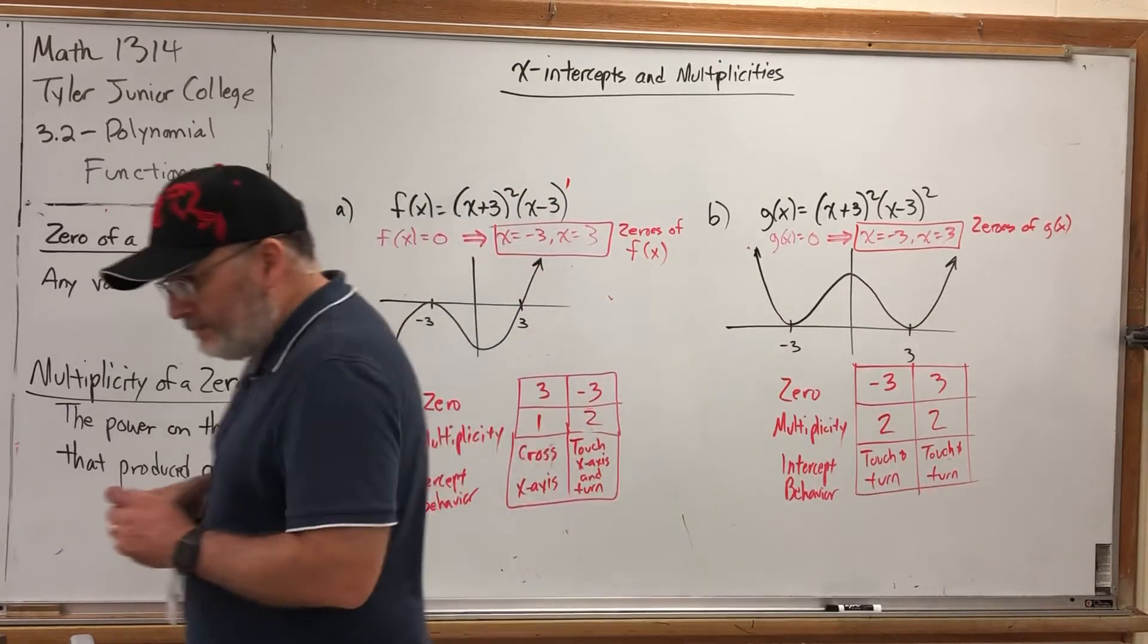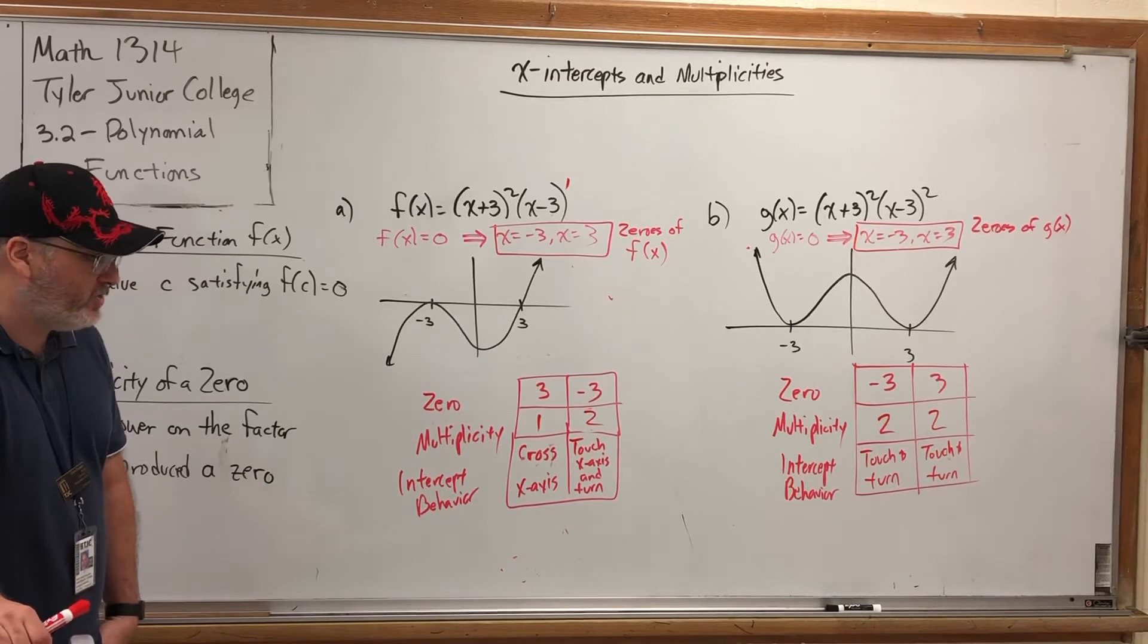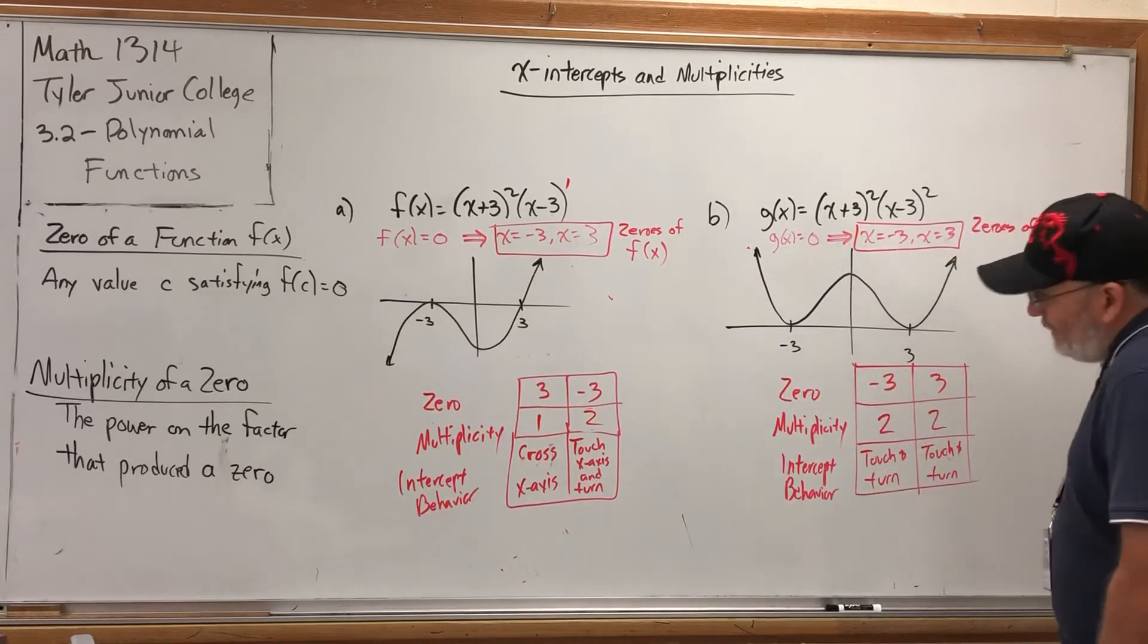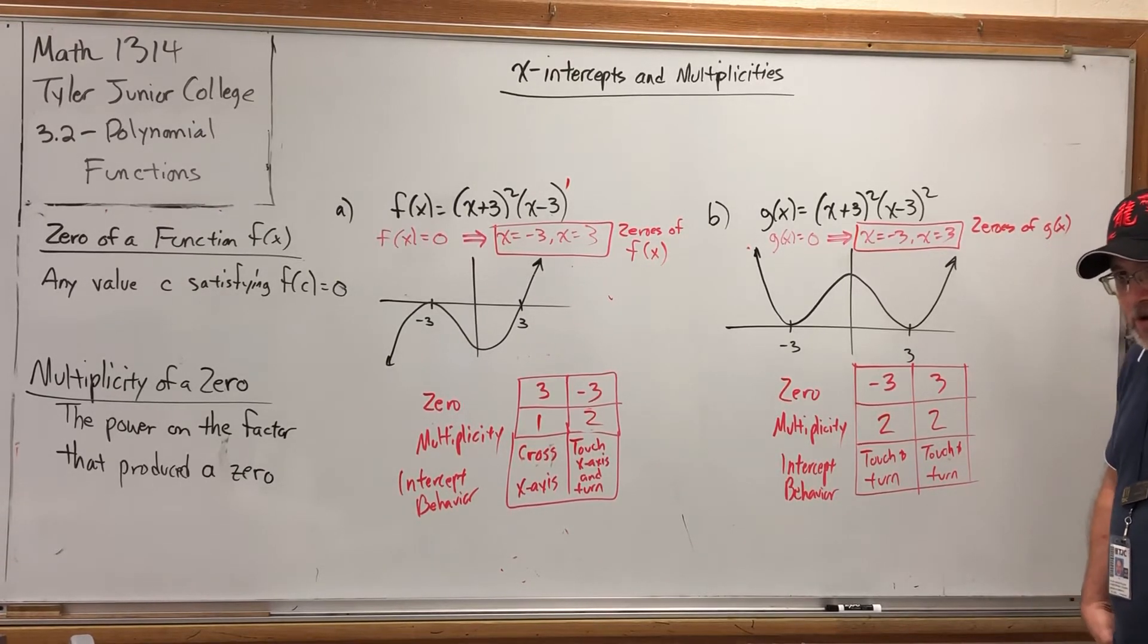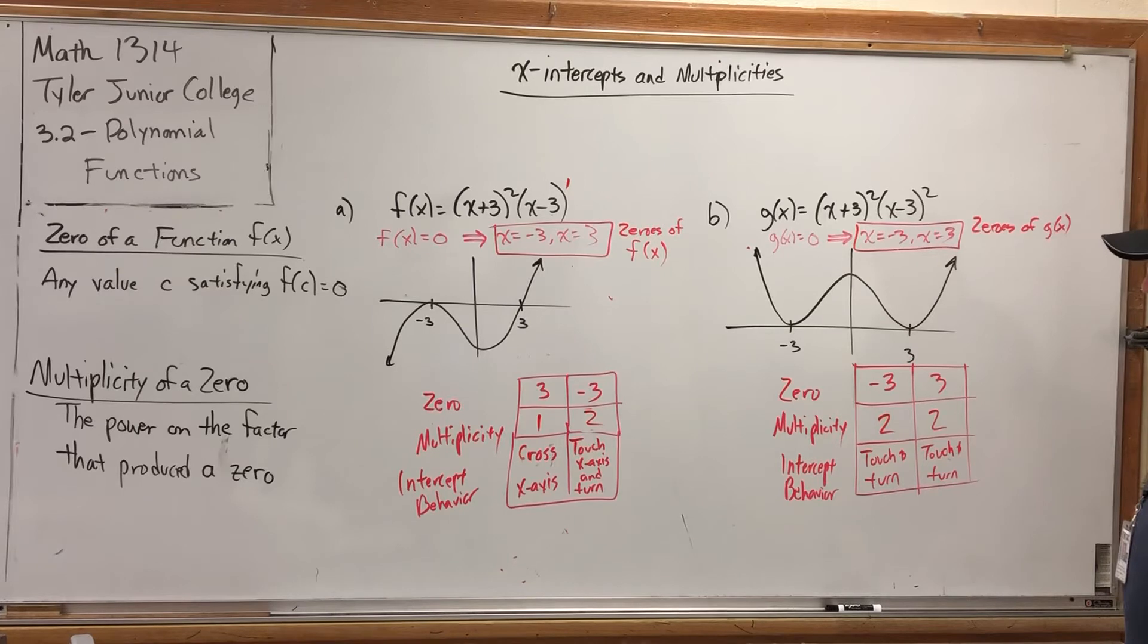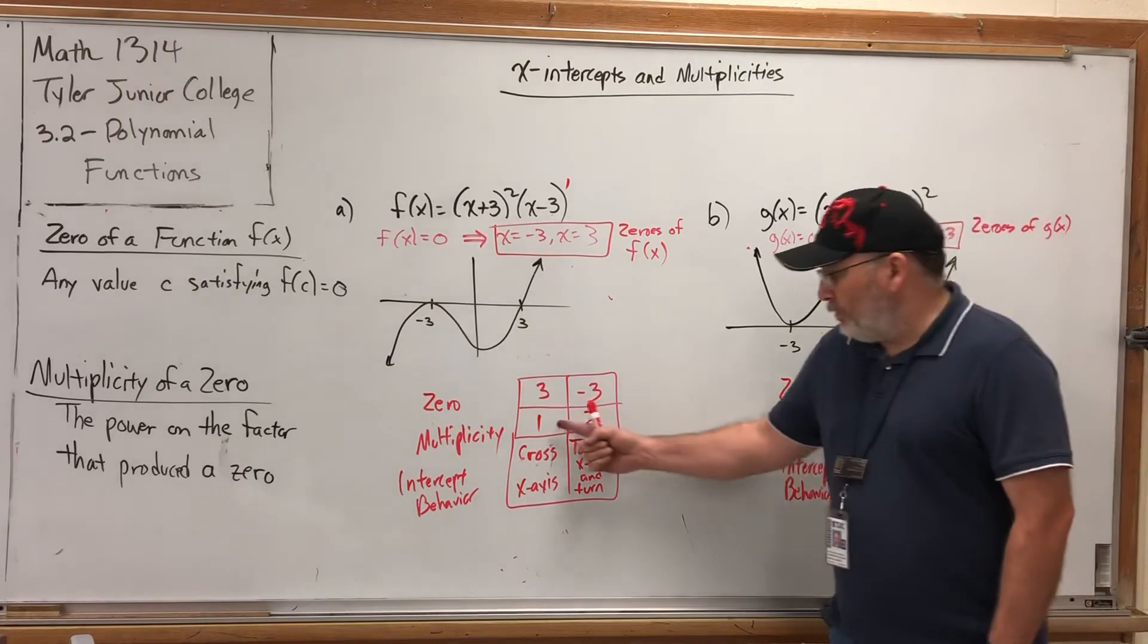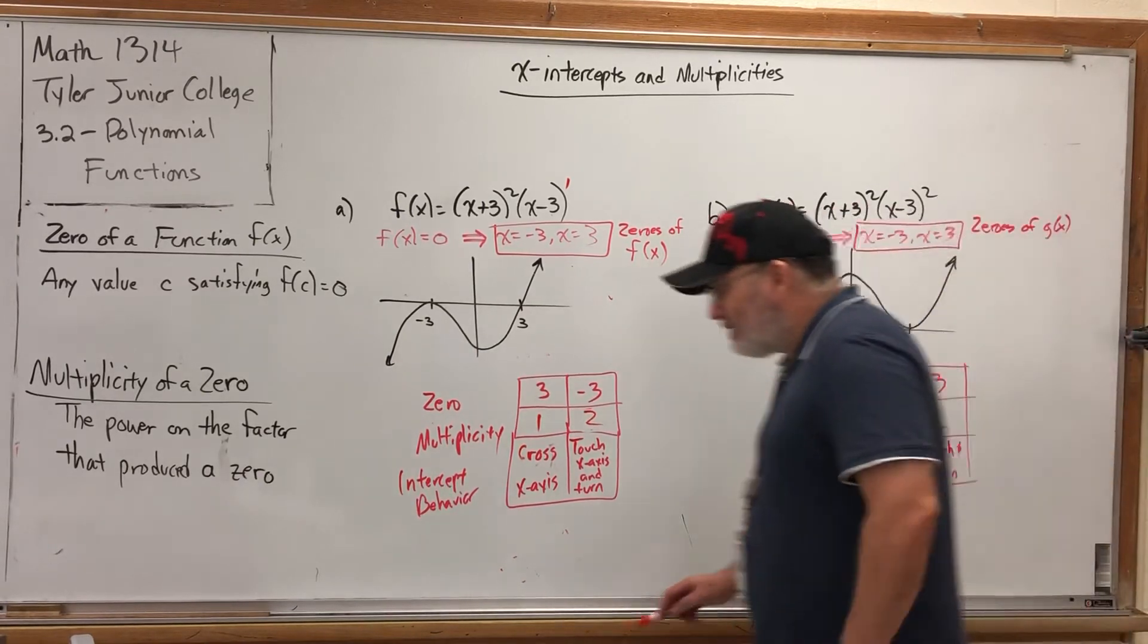So, do you see it? Do you see what characteristic of multiplicity might predict crossing the x-axis versus touching and turning? The only one that crossed the x-axis had a multiplicity of one. The others touched and turned and all had multiplicities of two. Just, just for full disclosure, it's bad math to make such a broad generalization with such a small number of examples. But, in this case, we will be correct. The characteristic that determines an x-intercept behavior is the parity of the multiplicity. Remember, parity means whether a number is odd or even. Specifically, when the multiplicity is odd, you will cross the x-axis. But when the multiplicity is even, you will touch and turn. That's worth writing.